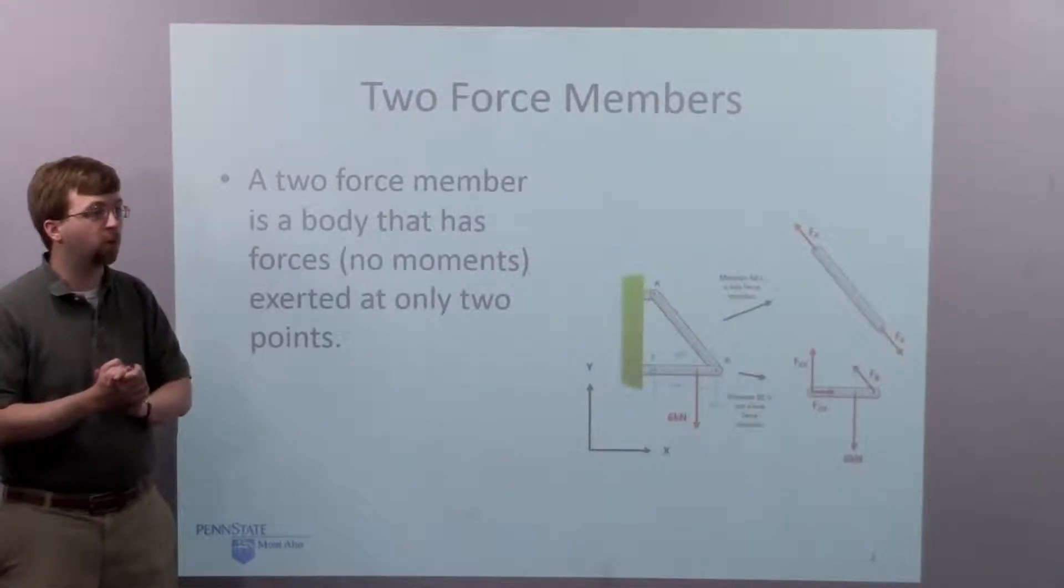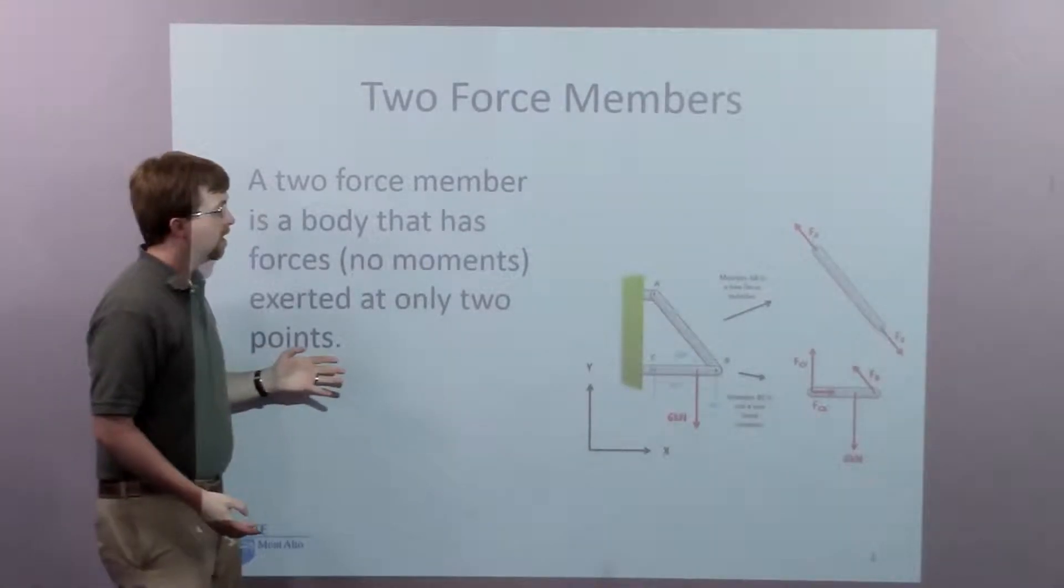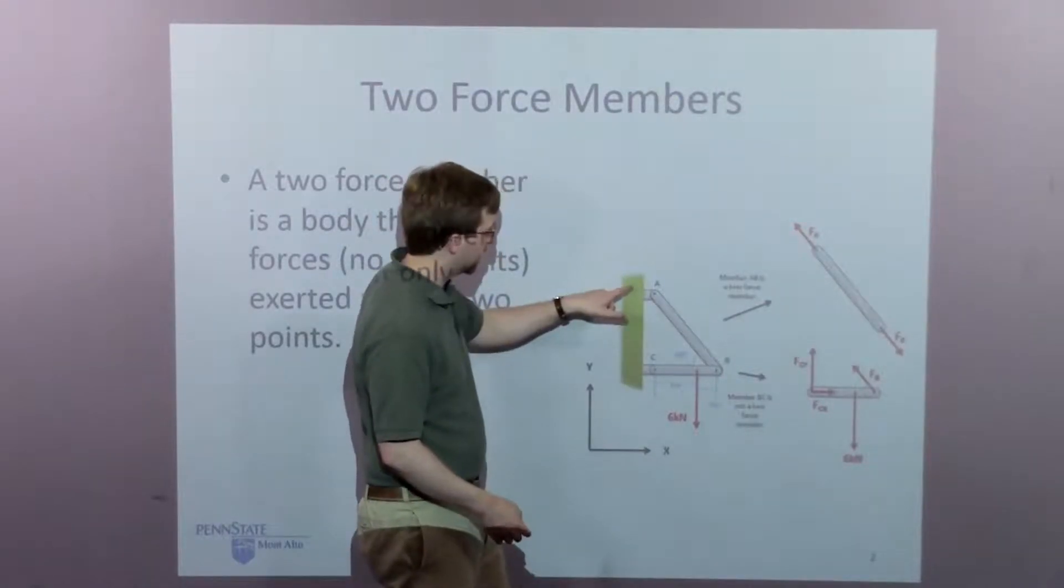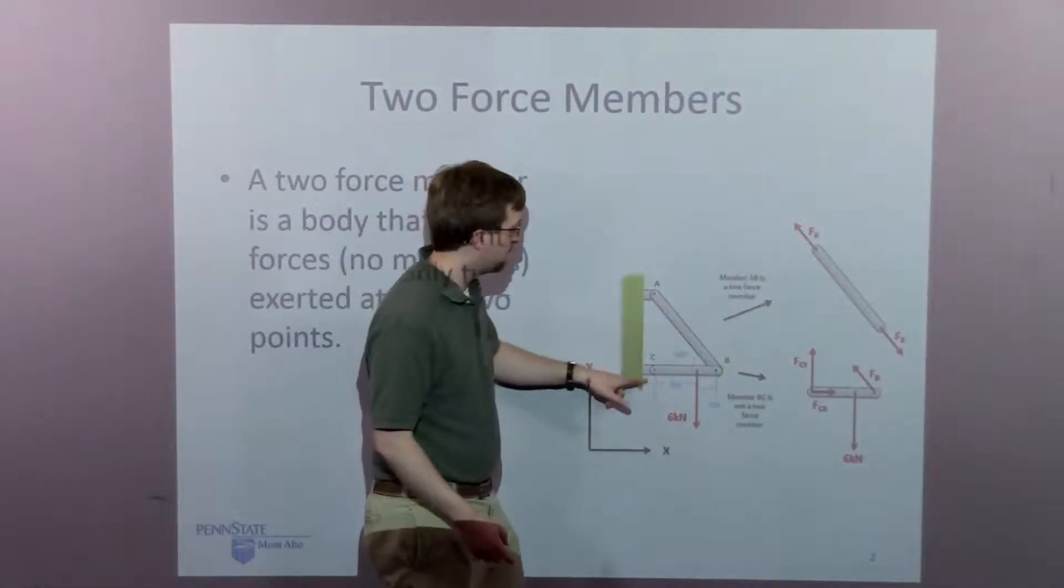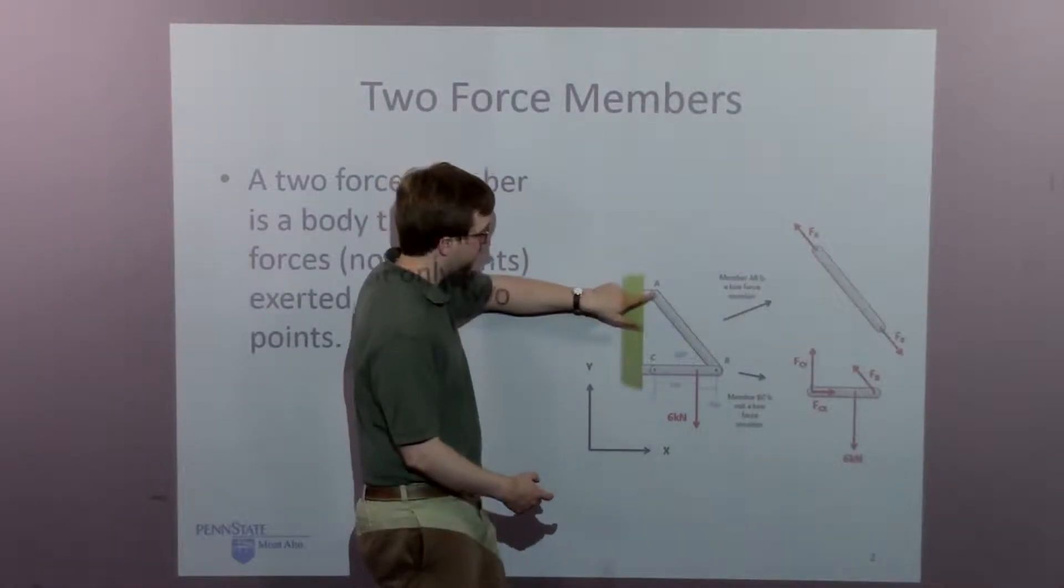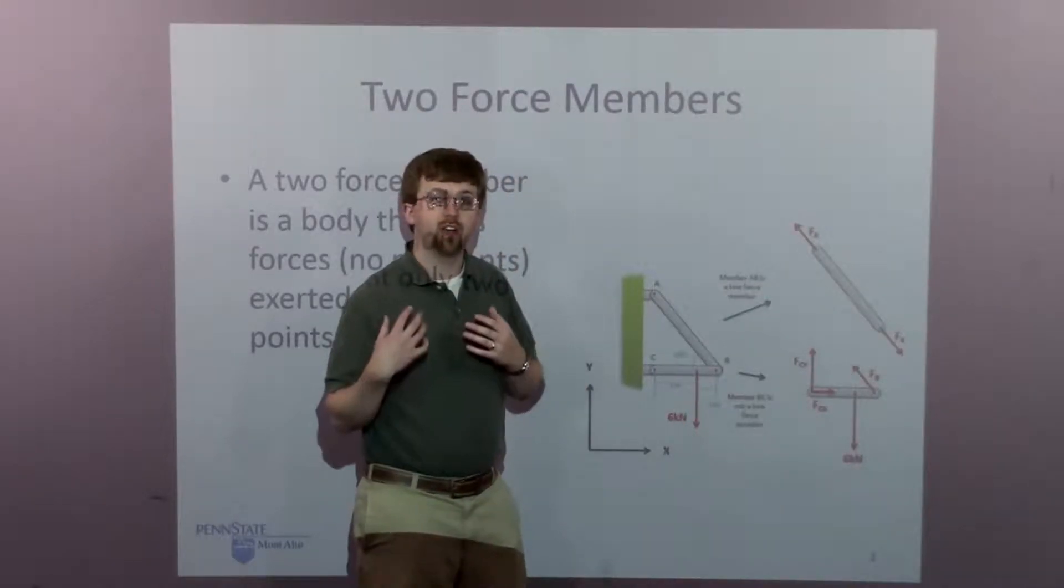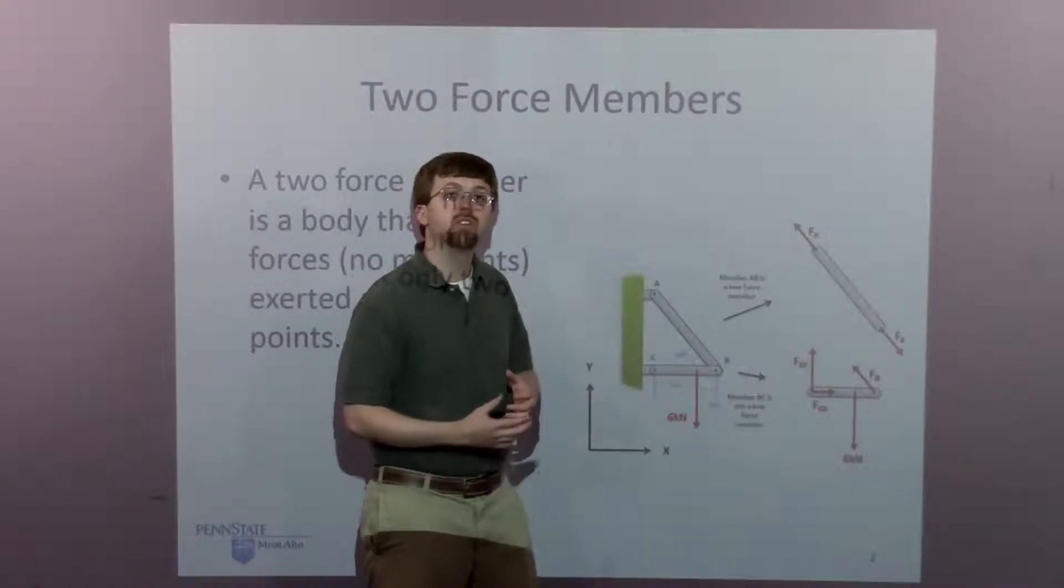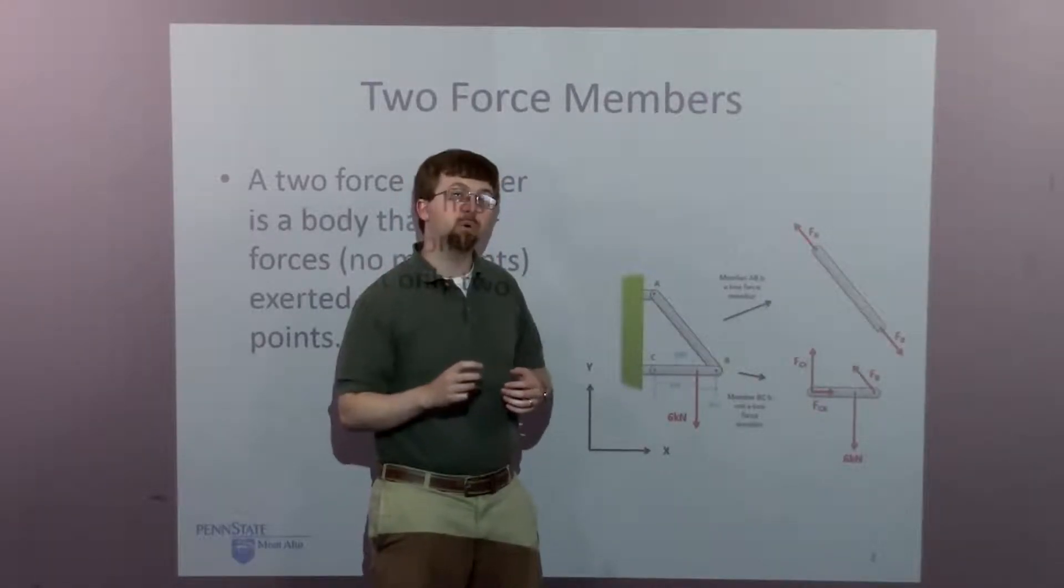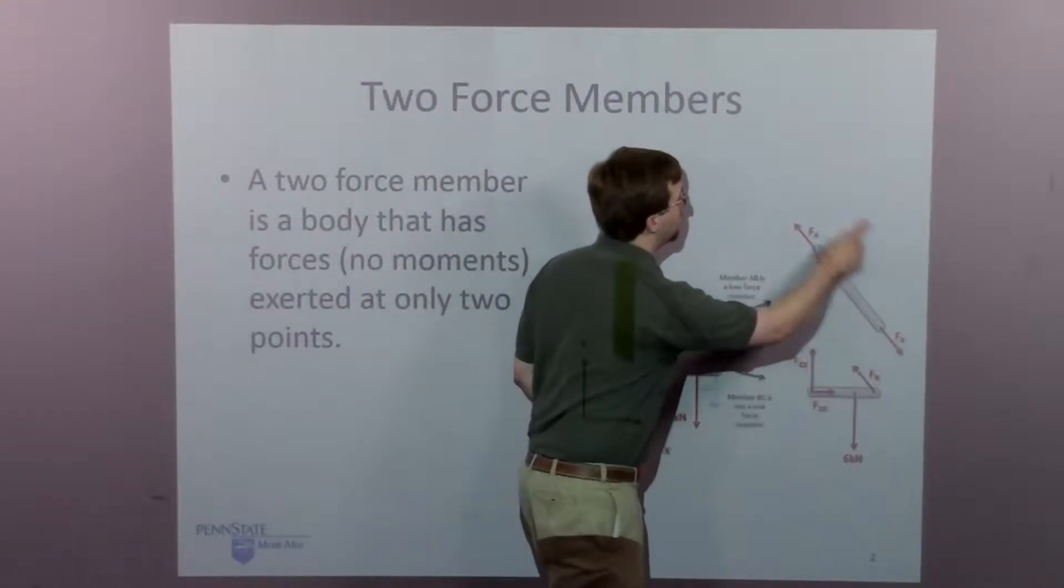An example of what is and is not a two-force member, I can look over here at this frame. Here I've got frame ABC, and I've got the top member AB, and the bottom member BC. Member AB is connected at A, it's connected at B, so I'm going to have forces that are the reaction forces at both of those points. I've got two connection points, two places forces are exerted, and this is going to be a two-force member.